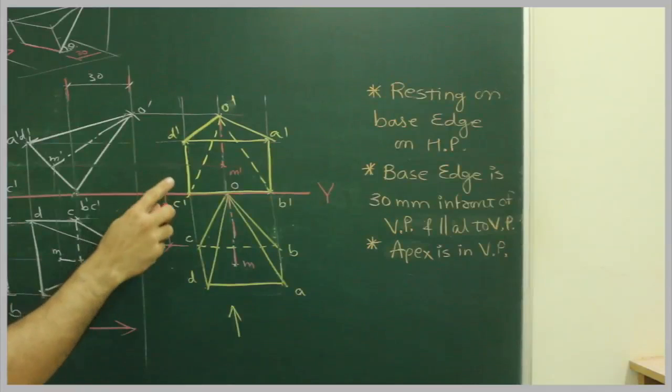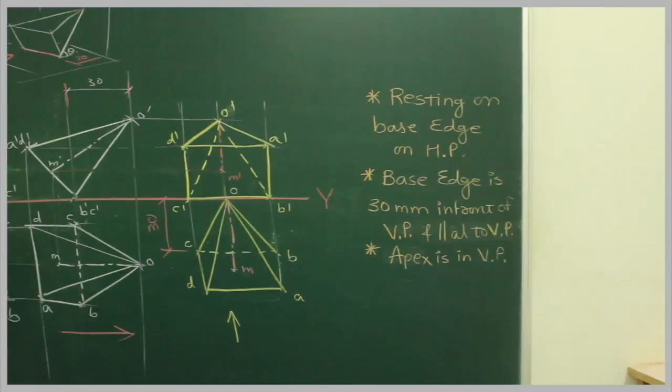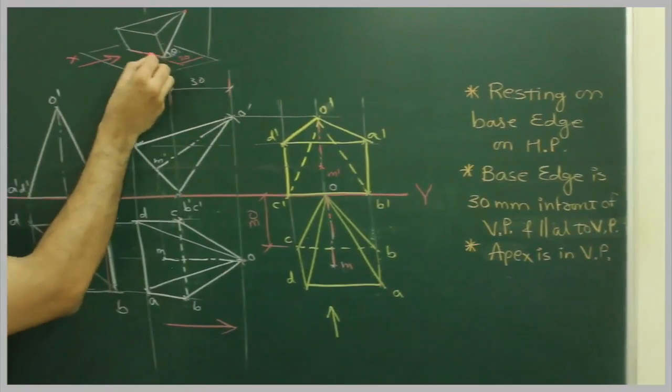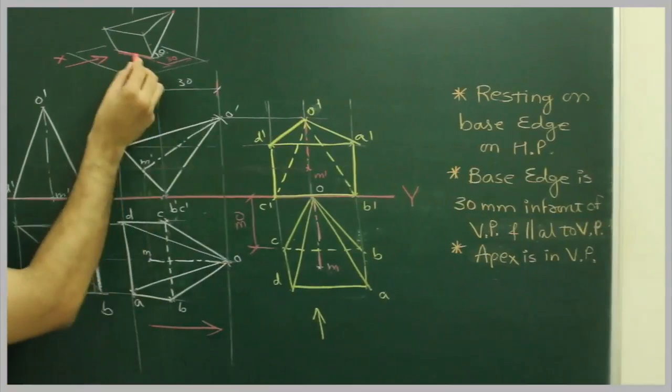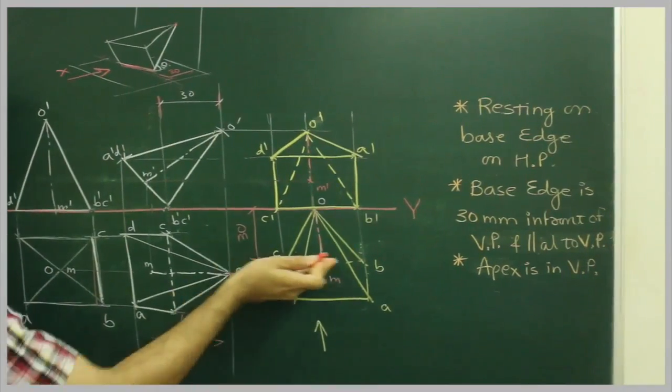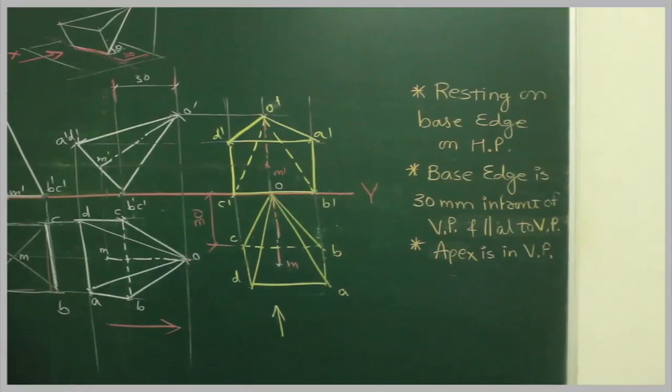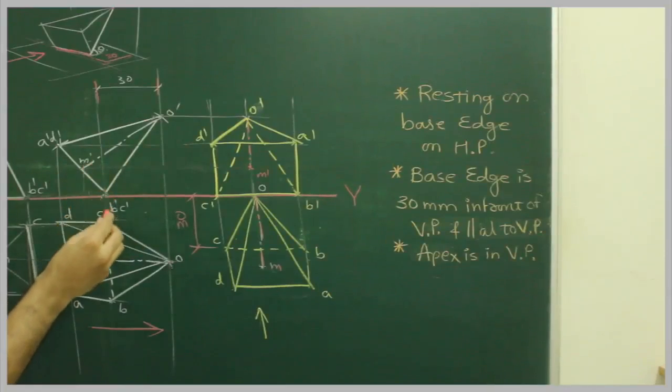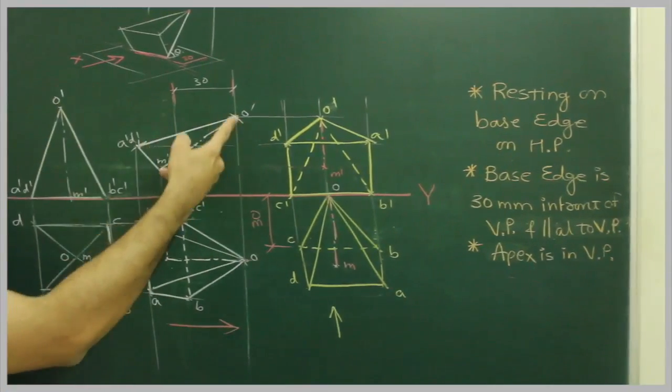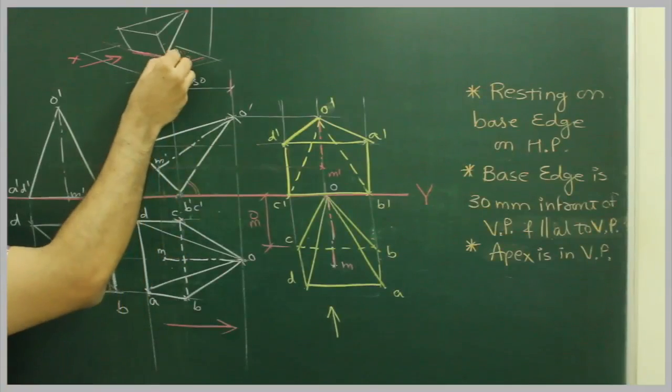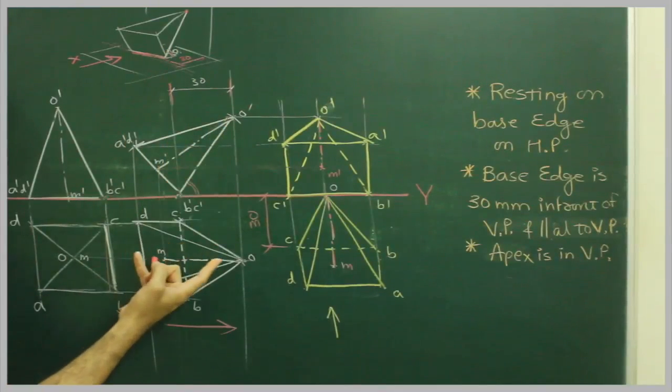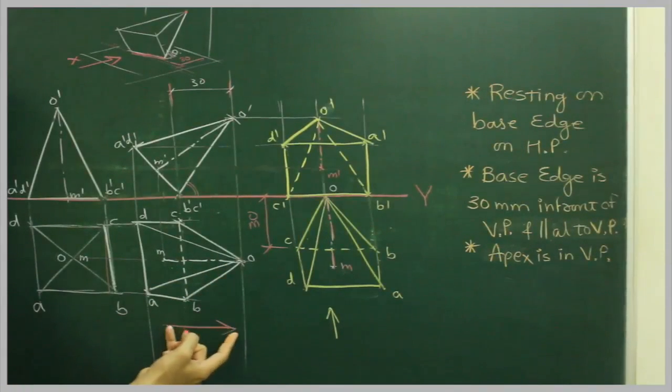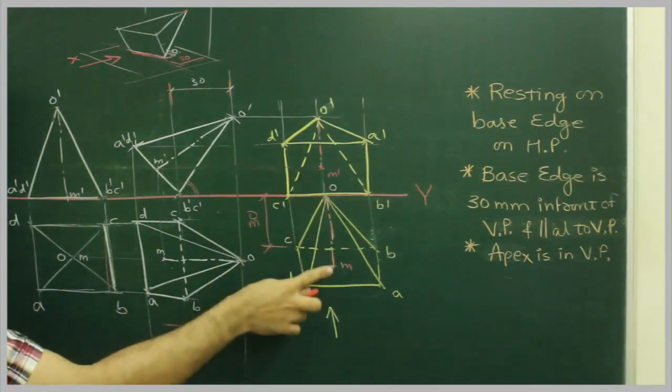This is the axis. Now once again you can read the problem - we have that base edge which is 30 mm in front of VP. See this is the base edge BC on which it is resting, which is 30 mm in front of VP and it is parallel to VP, and apex is in vertical plane. So to get this we have to draw this, that is why we have drawn D theta and we have drawn B' C', we took this span, we cut over it and we got this angle which was important. Once we got this angle then we have to rotate this in such a fashion that O has to be on X1, so this part we have to rotate like this 90 degrees and this is the front view and top view.